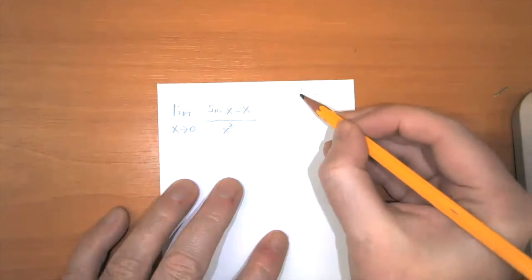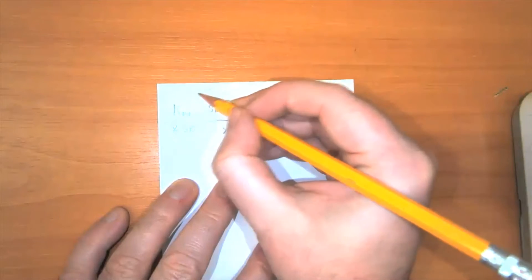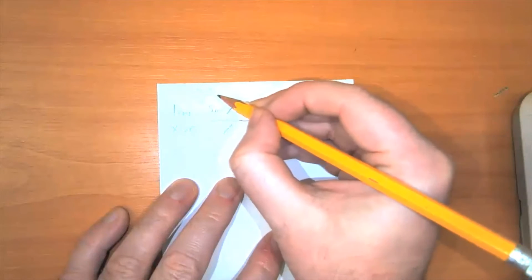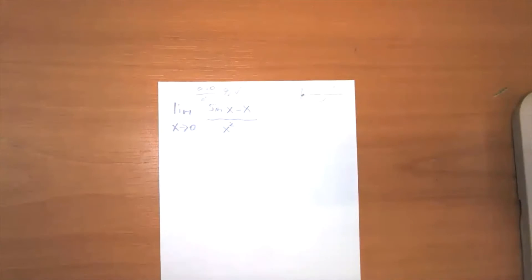So sine of zero is equal to zero. So that's zero minus zero over zero squared. So that's zero over zero. That is an indeterminate form, so we can use L'Hopital's rule for this.